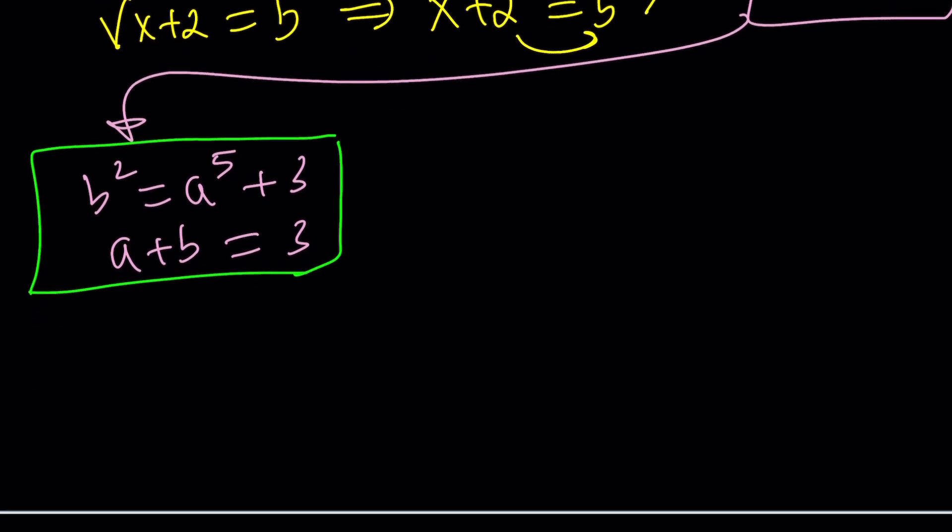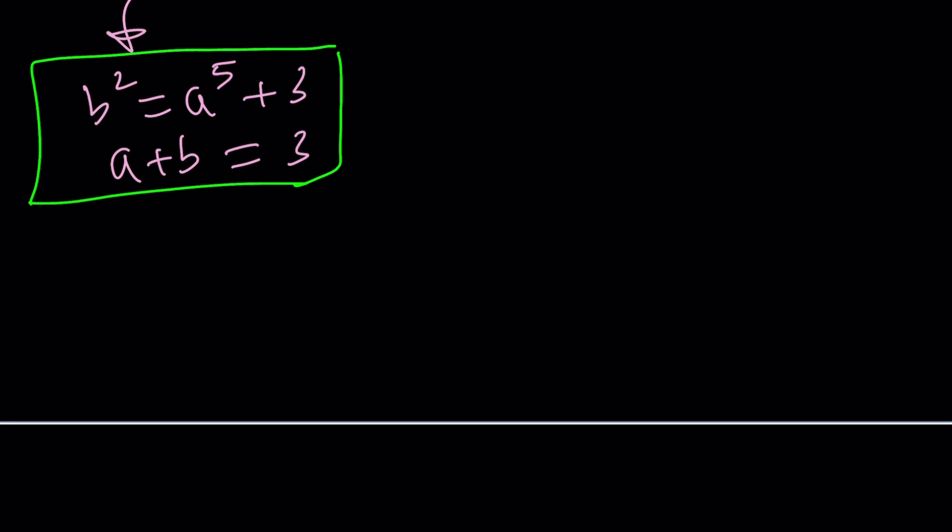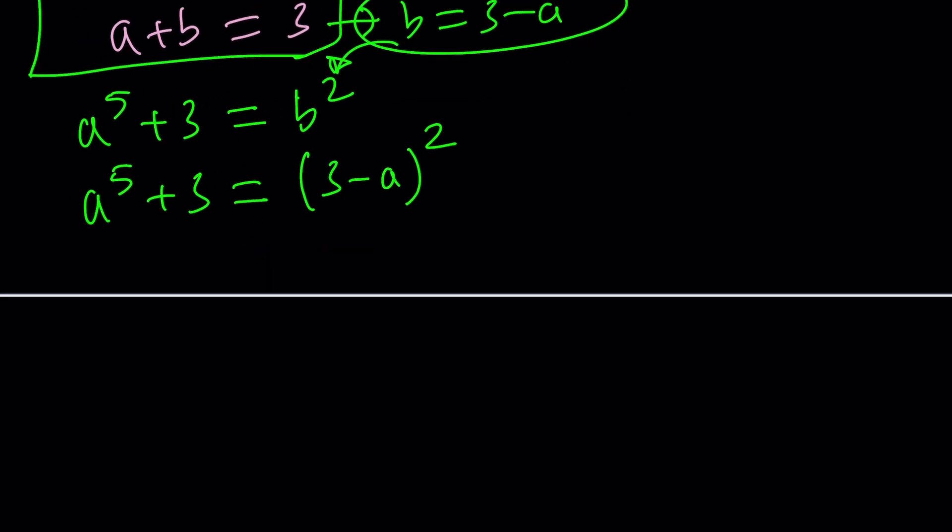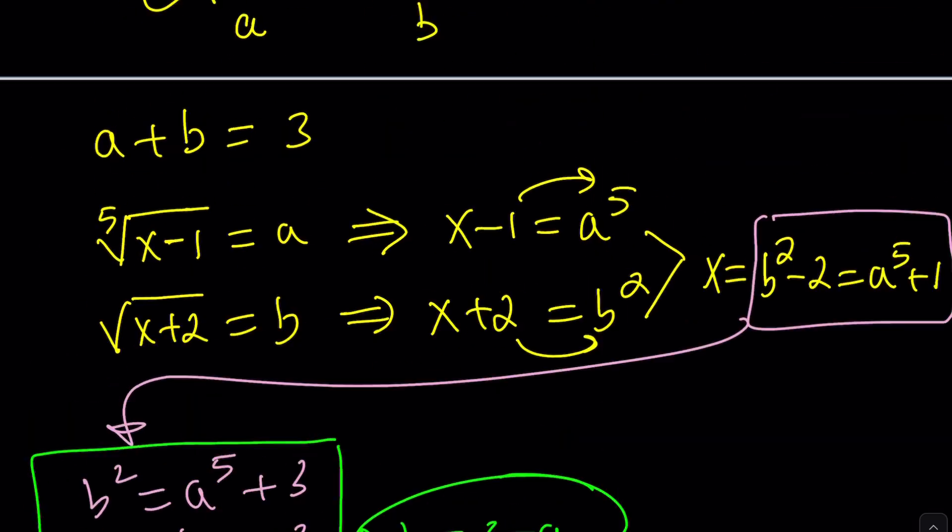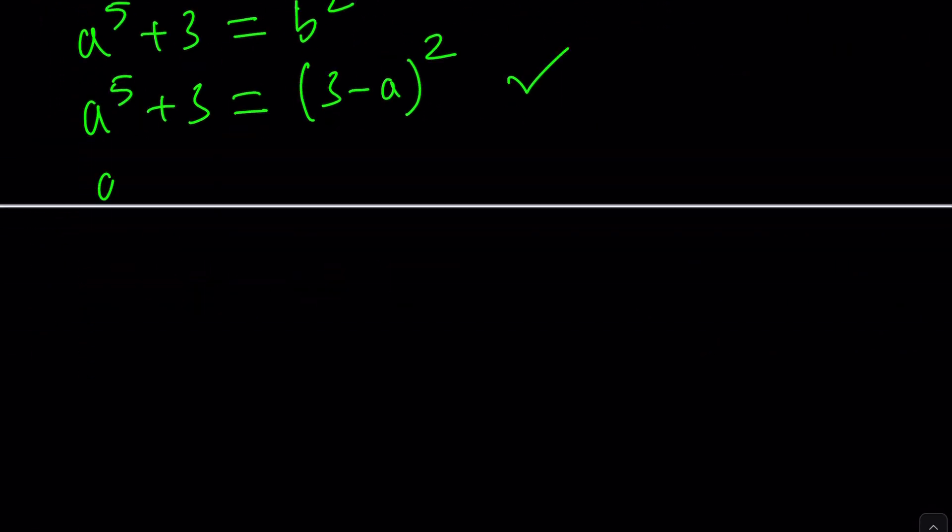It still becomes a quintic, that's okay, but it's a lot easier, because what you can do is, we could probably start with this, A to the fifth plus 3 equals B squared, and now, this is equal to B squared. I'm going to replace B from the second equation with 3 minus A, so that's something I'm going to substitute here. So A to the fifth plus 3 equals 3 minus A quantity squared, and again, this is a quintic, but a lot simpler. Look at this equation, and look at that equation. I mean, huge difference. Day and night.